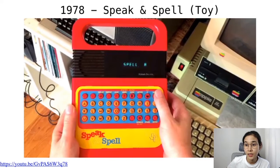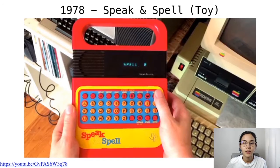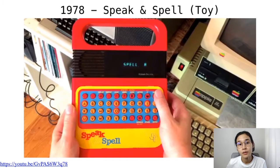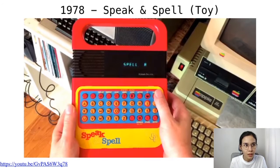So in 1978, the Speak and Spell — which is a kids' educational toy — would tell you a word and then tell you to spell it.